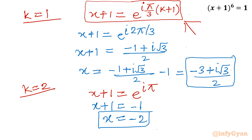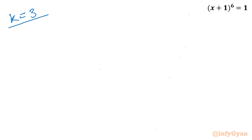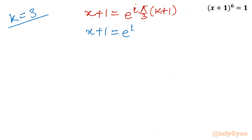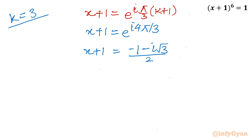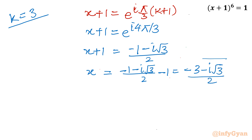For k equal to 3: x plus 1 equals e raised to i 4 pi over 3, which is in the third quadrant, so both cosine and sine are negative. We write x plus 1 equals minus 1 minus i root 3 over 2. Taking away 1 from both sides, x equals minus 3 minus i root 3 over 2. Again a complex solution.